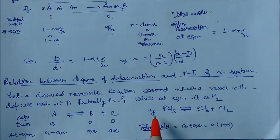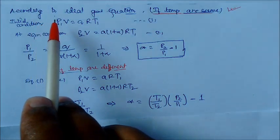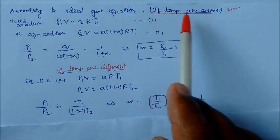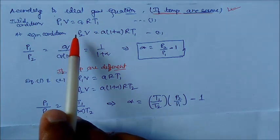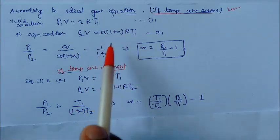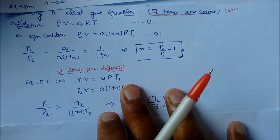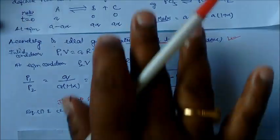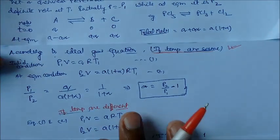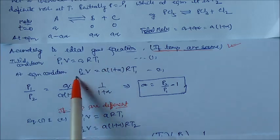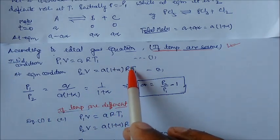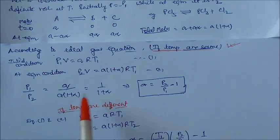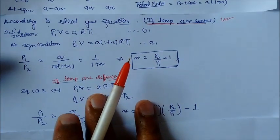According to the ideal gas equation, if temperature is the same: P₁V = A·RT (initial condition) and P₂V = A·(1 + alpha)·RT (equilibrium condition). Dividing: P₂/P₁ = 1 + alpha. Therefore alpha = P₂/P₁ minus 1. This is the formula when temperature is the same.